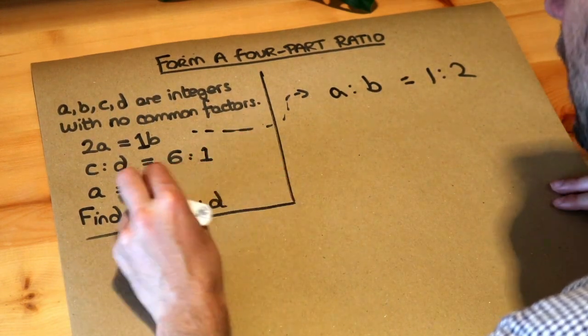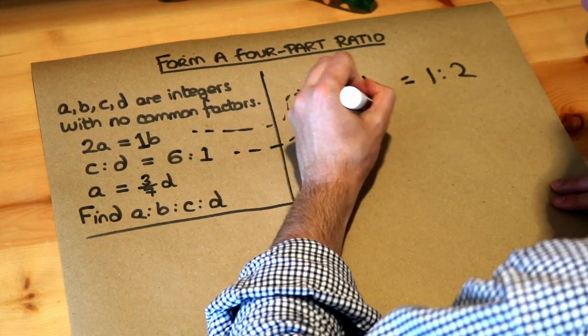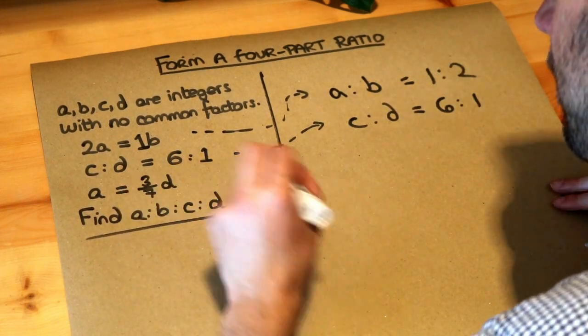And we can do the same with this equation here. So this here, if we just copy it, C to D is 6 to 1. And then finally, A is three-sevenths D.